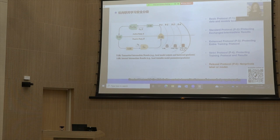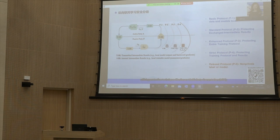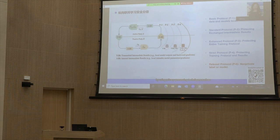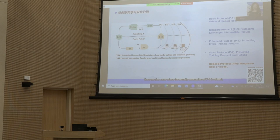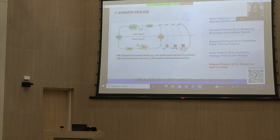Enhanced protocol P3 further protects the entire training protocol by utilizing techniques like secure multi-party computation. Strict protocol P4 protects the training protocol and learned models by using privacy-preserving techniques such as secret sharing and hybrid schemes combining HE and SS. In the literature, there are also cases where the security assumption of P1 is relaxed, resulting in a relaxed protocol P0 in which labels or models are assumed non-private.